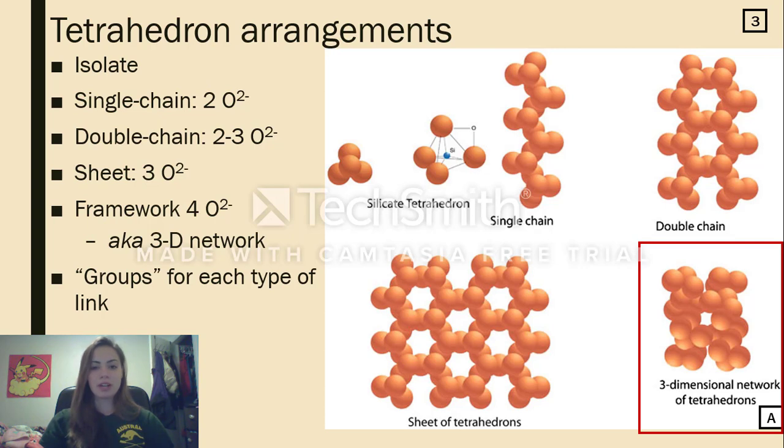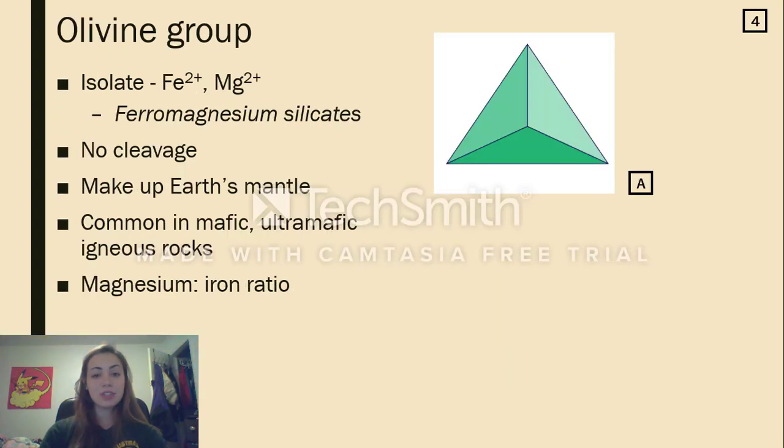Tetrahedron arrangements are how silicate minerals are primarily classified. Minerals with an isolate tetrahedron structure are known as the olivine group. They are known as ferromagnesium silicates, meaning that the cations that commonly bind to the silicate oxygen tetrahedron are iron and magnesium. Since there's no polymerization and only those strong silicon oxygen bonds, there is no weak structural points that can be easily cleaved in two. The olivine group makes up most of the Earth's mantle, usually in the form of mafic and ultramafic igneous rocks.